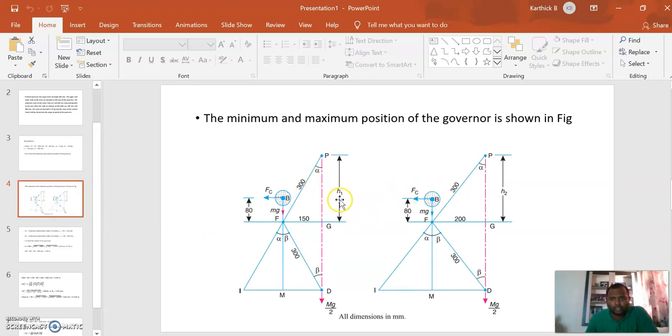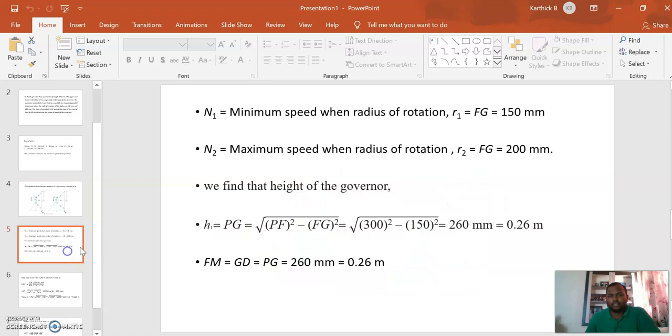To find h1, we can take triangle FPG as an equilateral triangle and find h1 using Pythagoras theorem. PG equals square root of 300 squared minus 150 squared, giving us the answer of 0.26 meters.